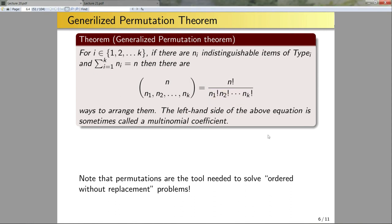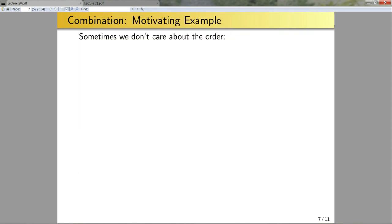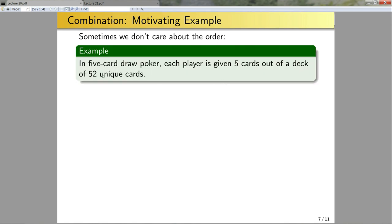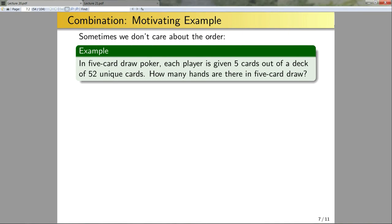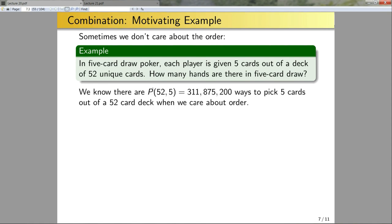Now let's look at a different type of problem — sometimes we don't care about order. In five-card draw poker, each player is given five cards from a deck of 52 unique cards. How many hands are there? Since the order of cards in a hand does not matter, this won't be a straight permutation — I'll need to modify the approach to remove duplicate hands.